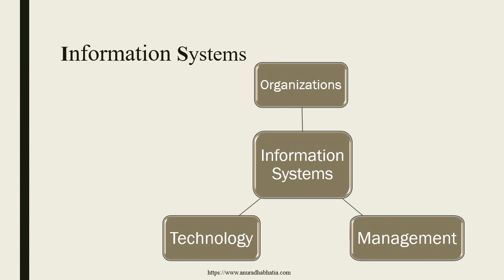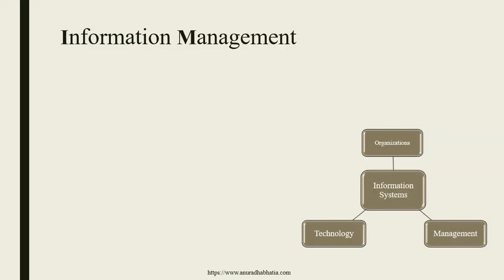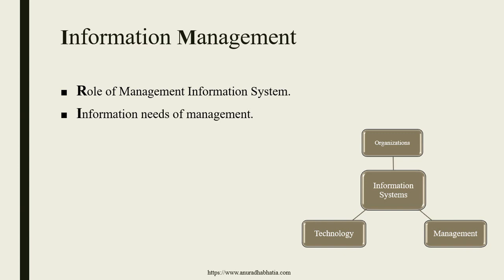Management is how we manage the particular data available to the organization with rules and regulations defined so that the information system works perfectly. So information systems have three important ingredients: technology, management, and organization. For this particular information system, we have to study what is the role of a management information system — the information needs of management and conventional information systems. Before computers came into the picture, there were still management information systems working.